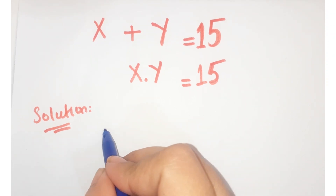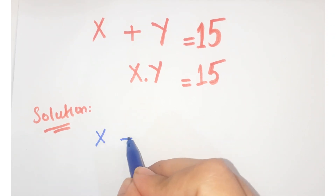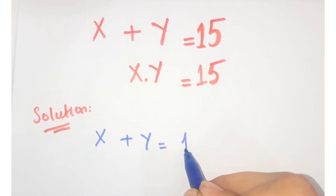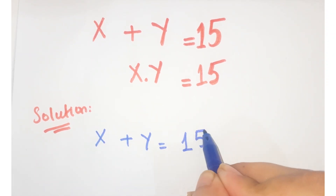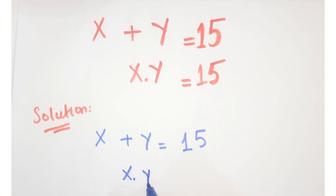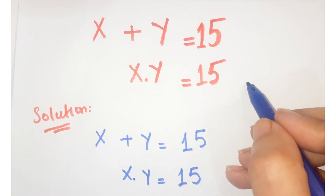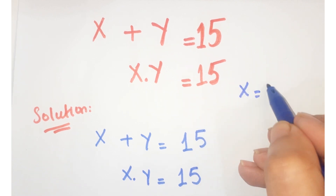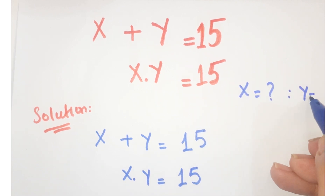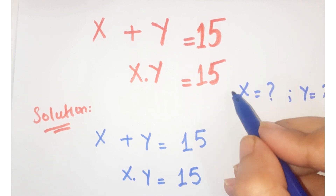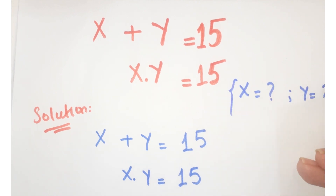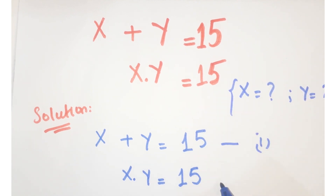Look at this question. The question is x plus y equals 15 and x times y equals 15. We have to find the values of x and y. Call this equation number 1 and this equation number 2.